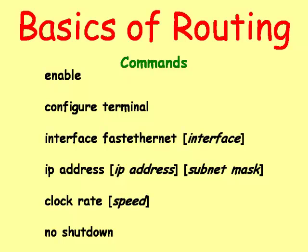The IP address command allows an administrator to assign an IP address to a specific network interface. The clock rate command provides the necessary timing when using a serial interface. This command is not needed for ethernet or fast ethernet interfaces. And finally, the no shutdown command activates a specific interface.